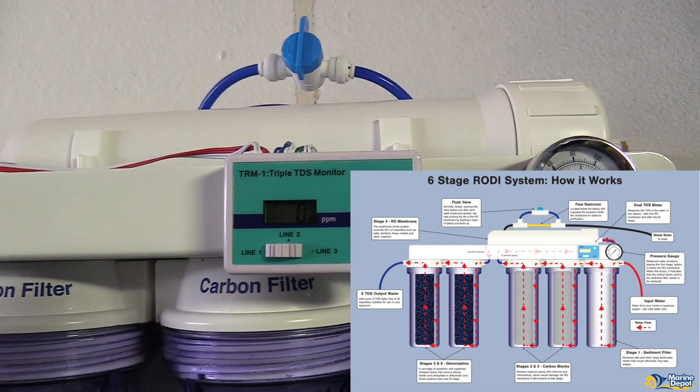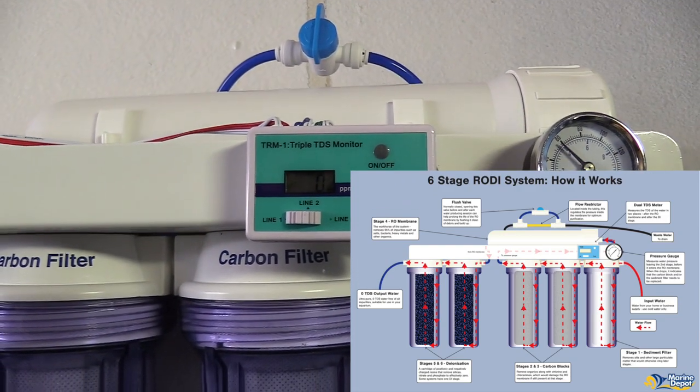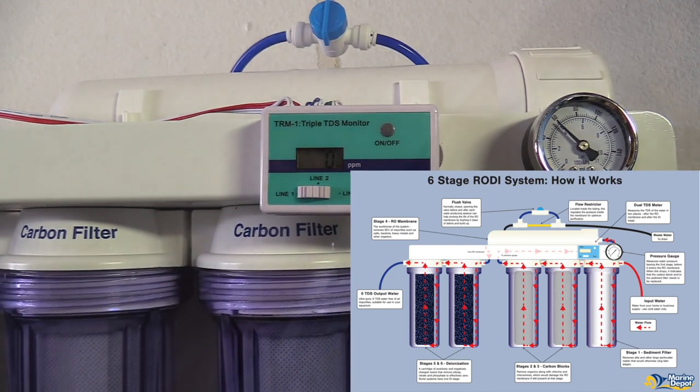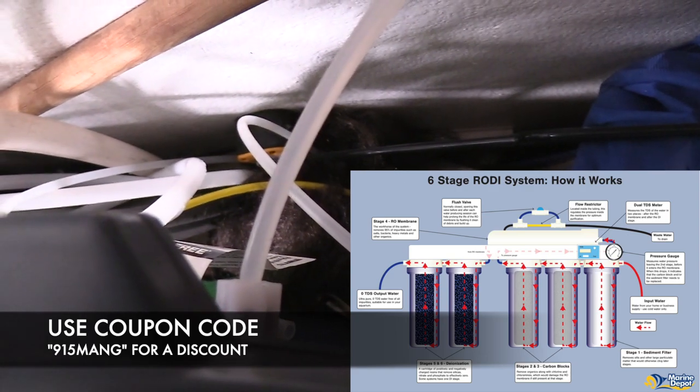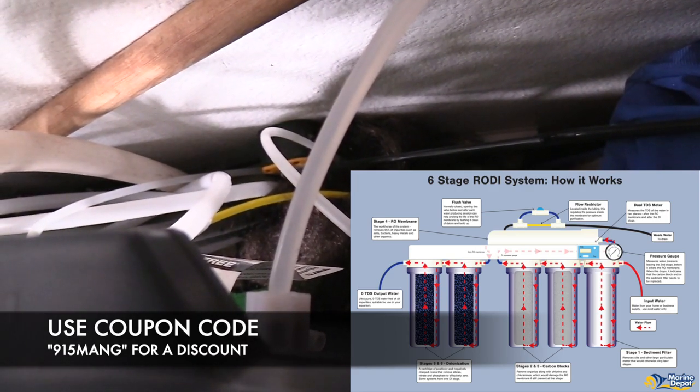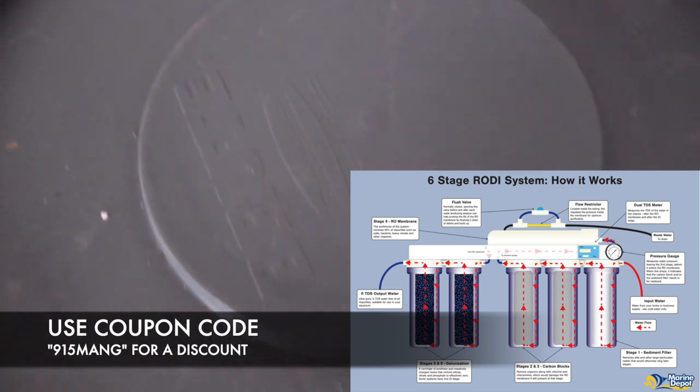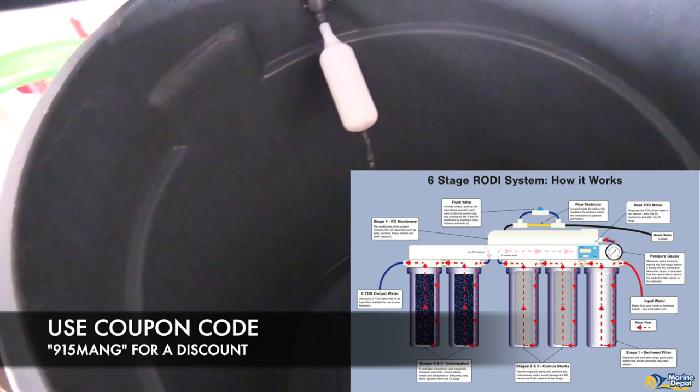Keep in mind, this is the heart of your system. You're going to want to take care of your filters and change them out every six months. If you use the coupon code 915mang, you'll get a discount, especially if you're a first time user. Just go to Marine Depot and you can order this RODI system, get a discount, and you'll be good to go.